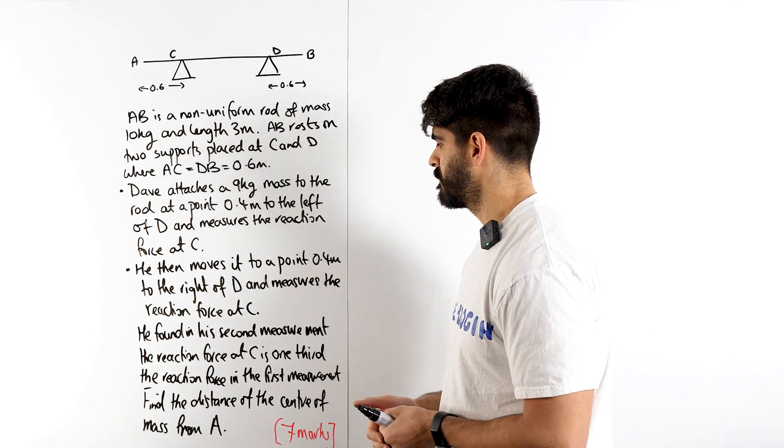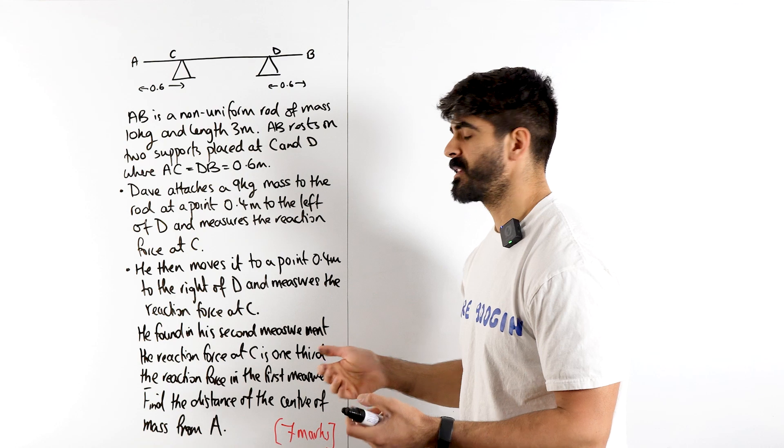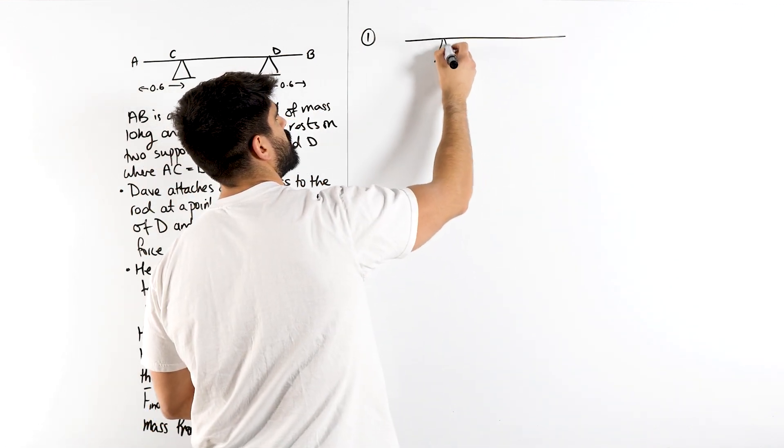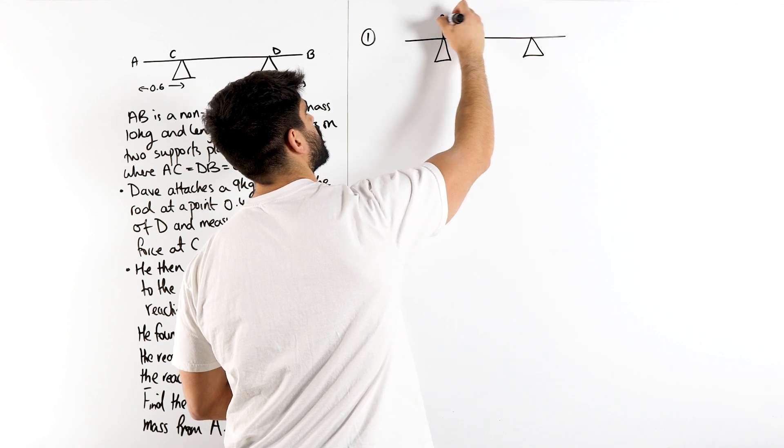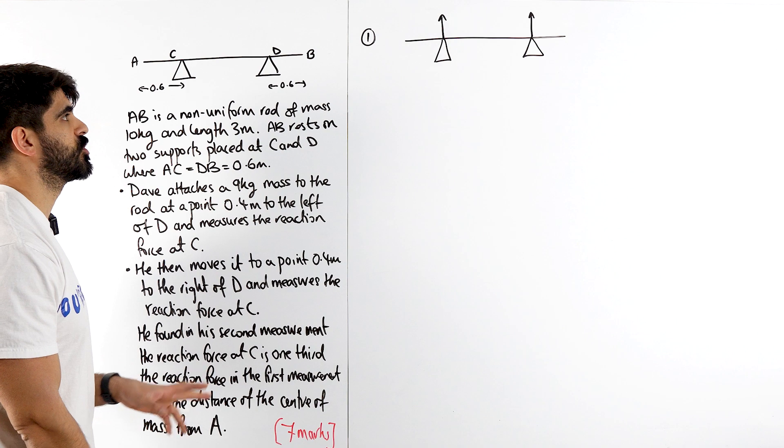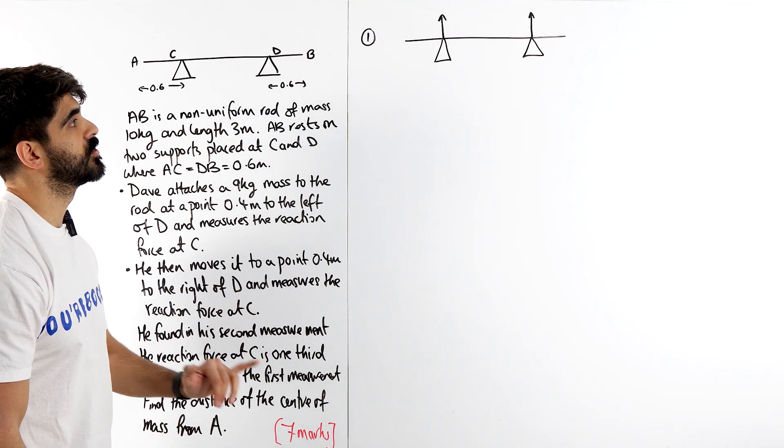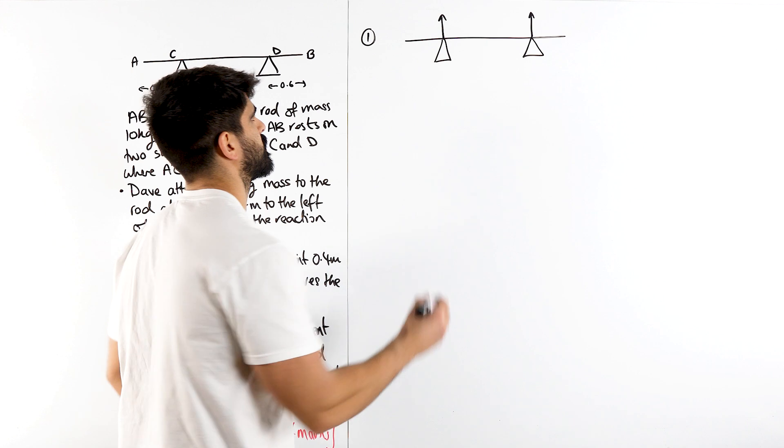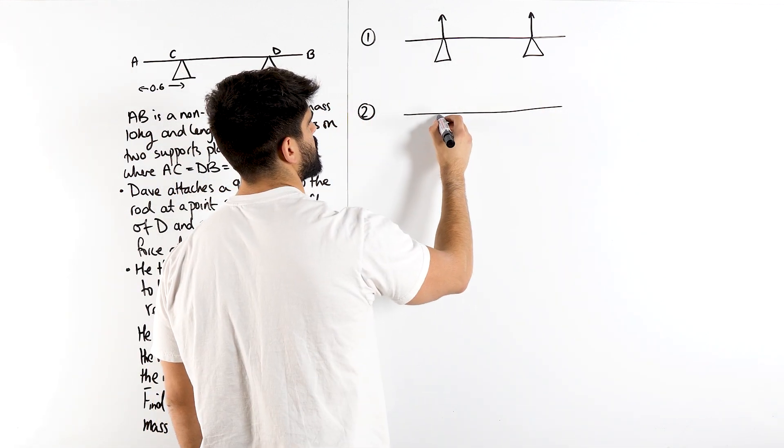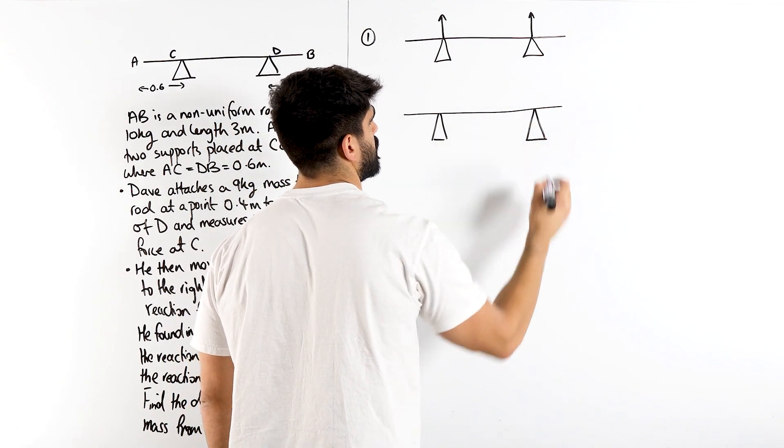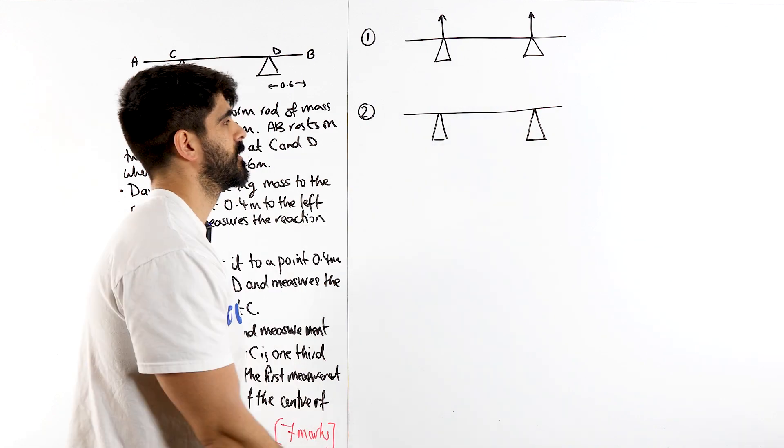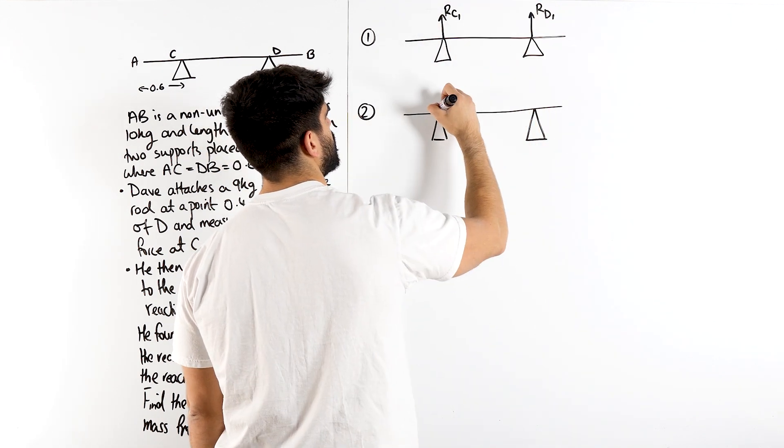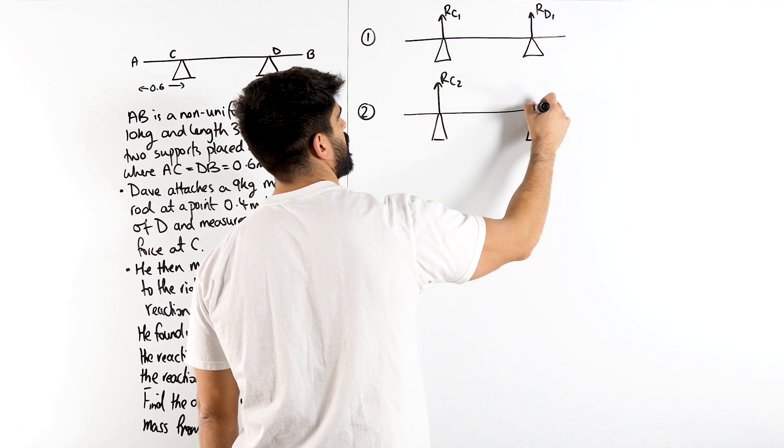Okay, we have two situations and in those two situations we form a connection between them. When this happens guys, you need to draw two separate diagrams. So we have situation 1, we have our two supports. Now, because we're forming a relationship between the reaction at C in two different things and then you have the reaction at D, we have to be careful about how we name these things. So I wouldn't use RC and RC. So maybe RC1 and RD1 for the first situation, then we have RC2 and RD2.